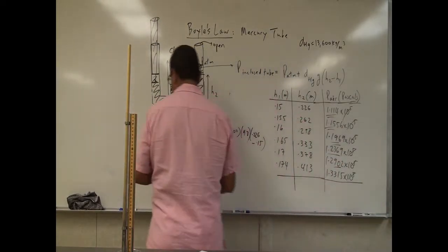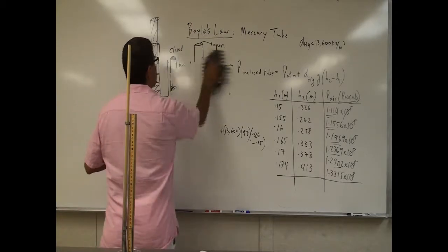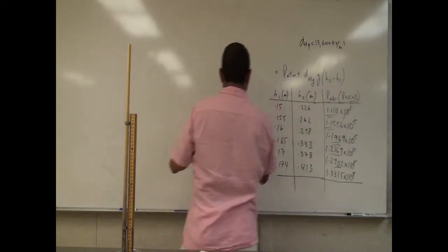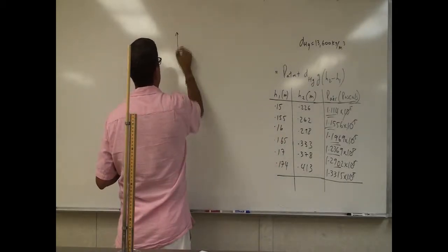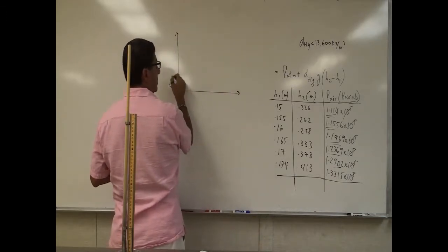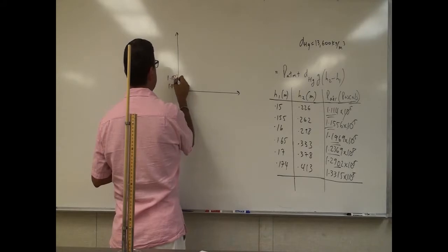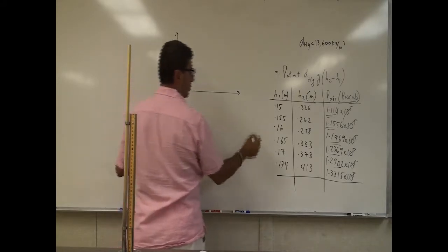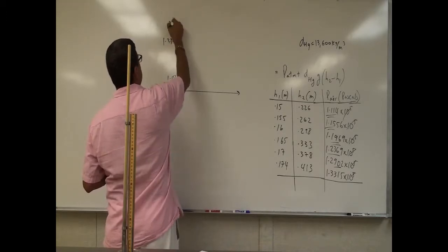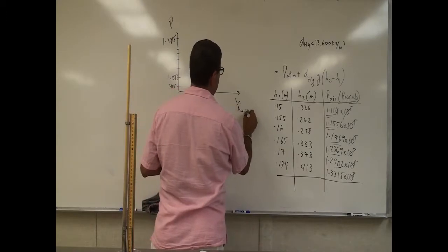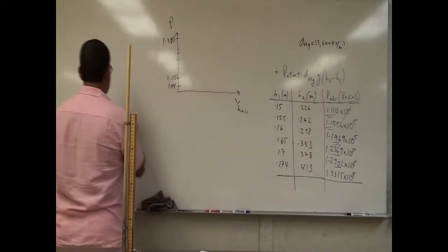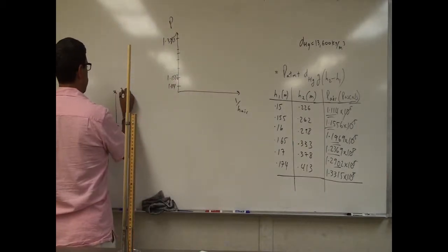When I do my plotting, I don't really even need the 10 to the fifth, because all I'm trying to show is that the pressure is inversely proportional to the height. So all I care about are the numbers themselves — how are the numbers increasing. On the vertical axis when I open up Excel, I can have the pressure. So my data points will be 1.114, 1.1556, and so on, until you get to 1.3315. And then over here I'll put 1 over the height of the air. The closed tube was 30 centimeters — from here to here was 0.3 meters.